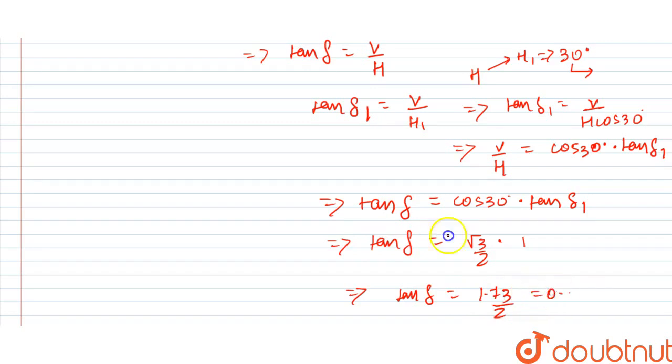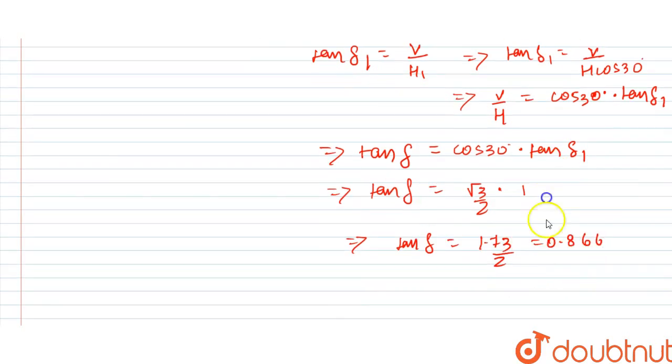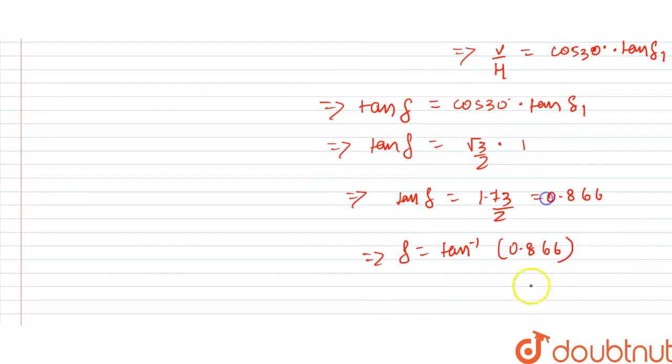Or 0.866. Now we can see delta value will come as tan inverse 0.866. It's approximately equals to 40.9 degrees.